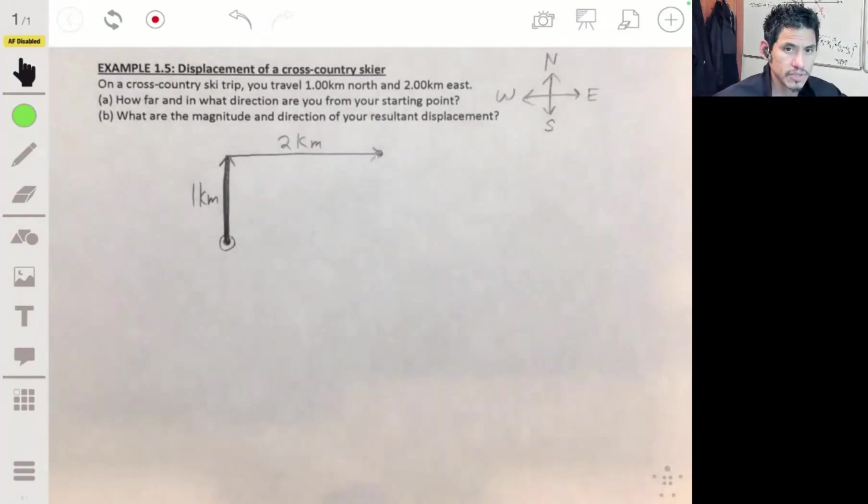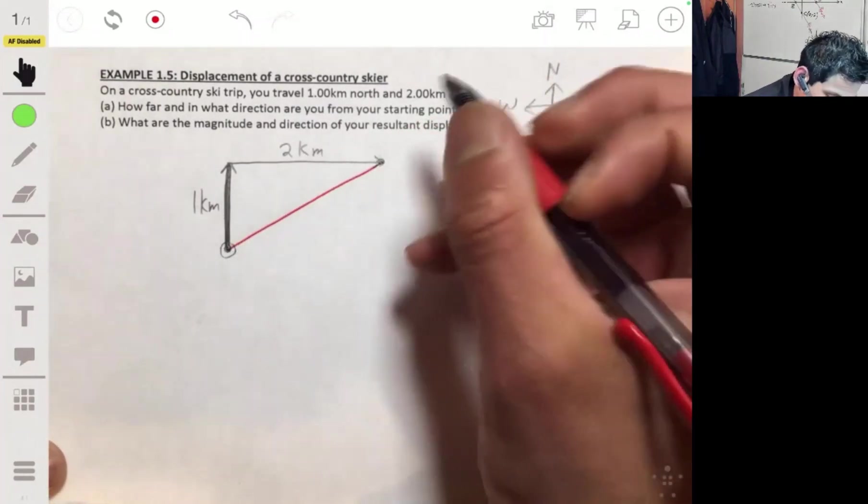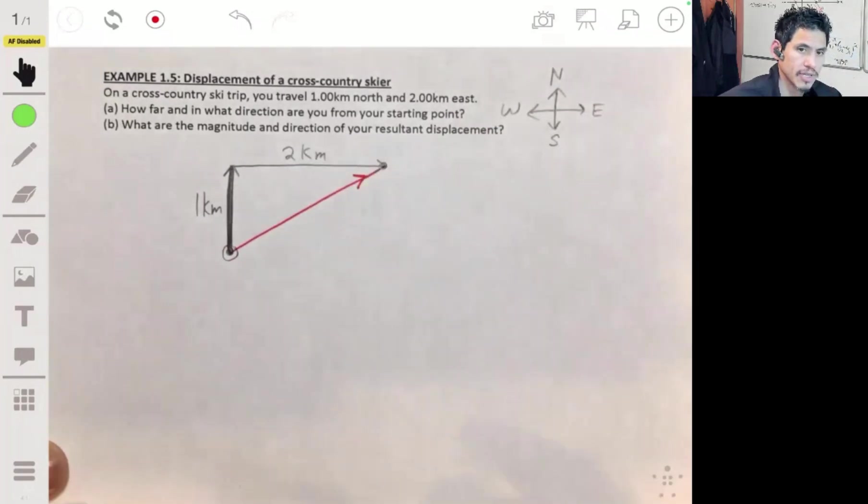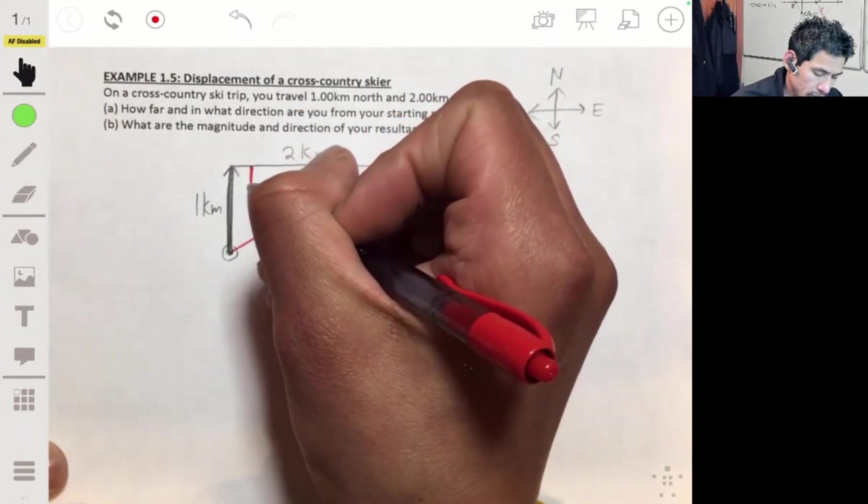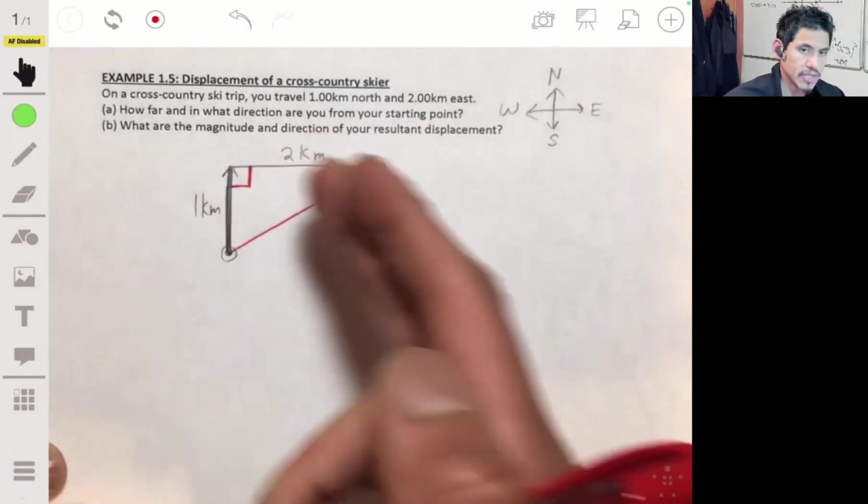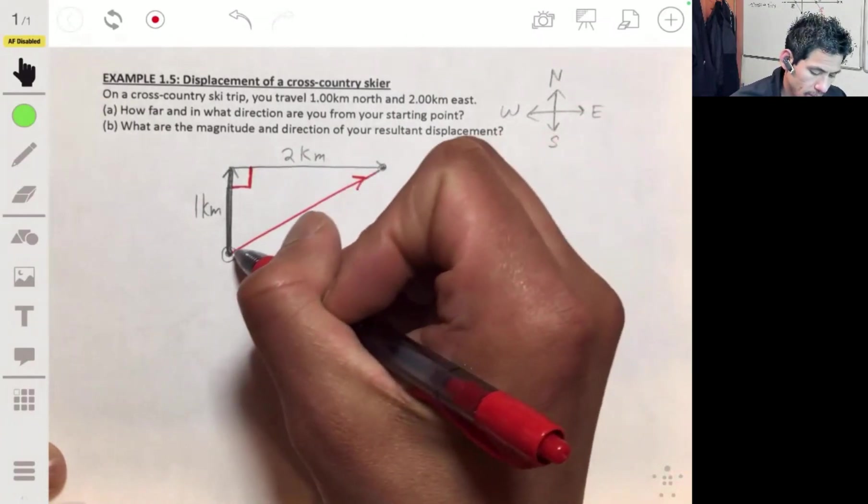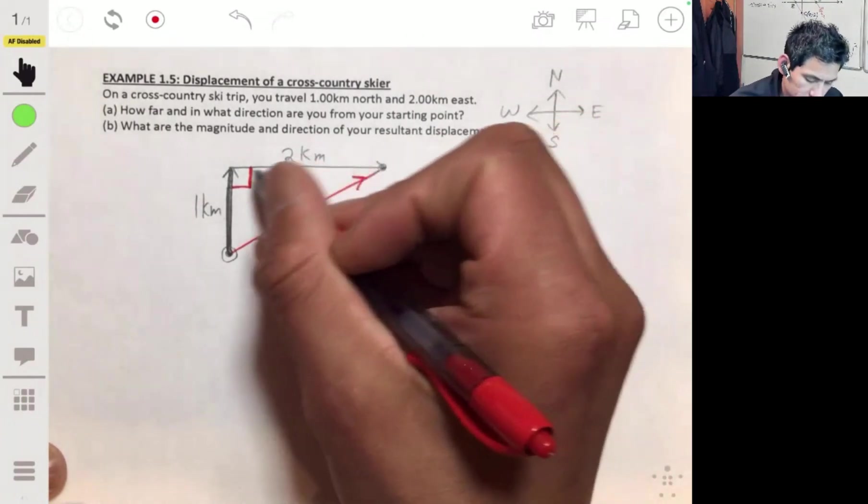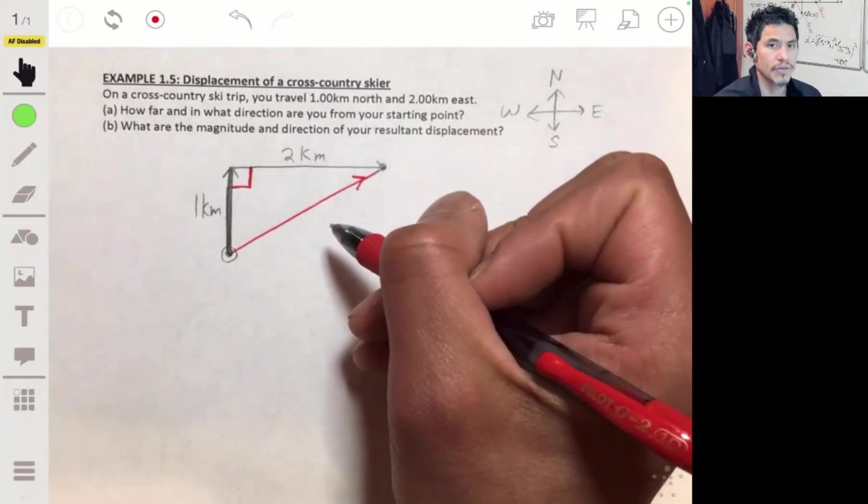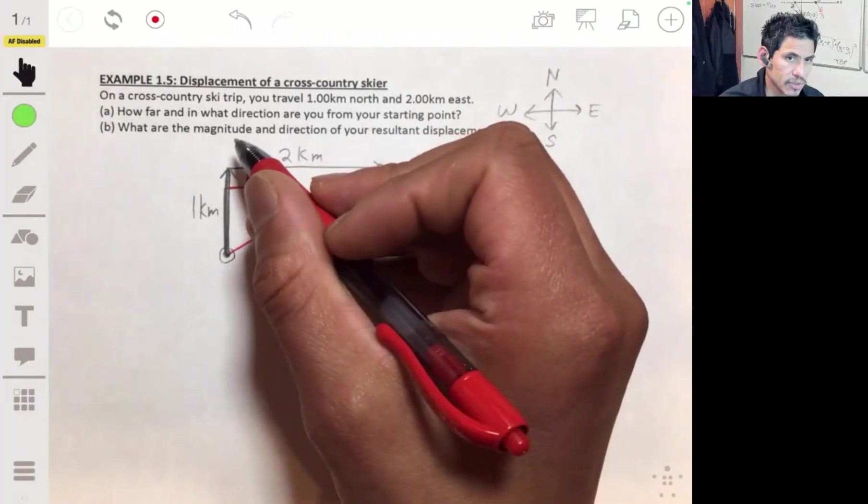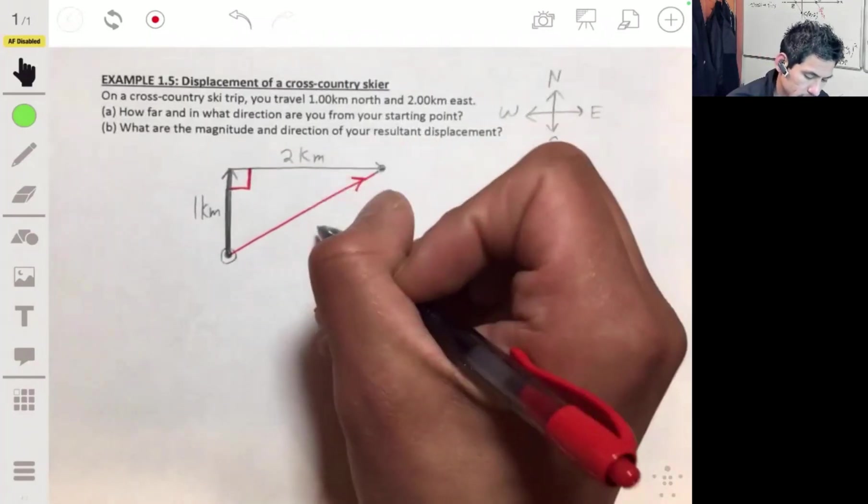So we started at this point over here and we ended over here. So the resultant vector would just be a line from here to here, a straight line. Now, this is going to be a right angle because we went straight up north and then to the east. So the length of this right triangle is going to give us the value of displacement or the magnitude and tell us how far we traveled. Let's call it D.